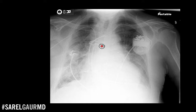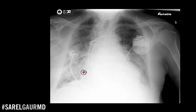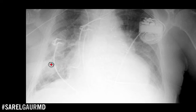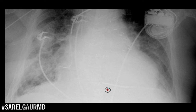Inpatient, multiple priors — go. So first thing I'm doing is lines and tubes. I'm seeing this high-density catheter here — this is a PICC line, termination in the SVC, so that's okay. I'm seeing a cardiac device here; I'm looking for the leads. I see a lead going into the right atrium region, so that's okay. Then I see another lead going and terminating in the right ventricle.